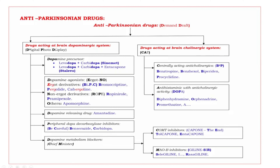When we come to the drugs acting at the brain dopaminergic system, it is further subdivided — the mnemonic is 'Digital Photo Display,' with bold letters D, D, D, P. First D: dopamine precursor. Second D: dopamine agonist. Third D: dopamine releasing drug. P: peripheral dopa decarboxylase inhibitors. Lastly: dopamine metabolism blockers.